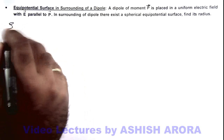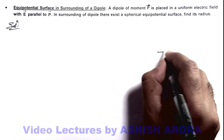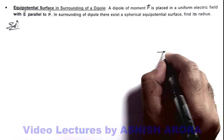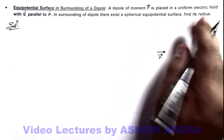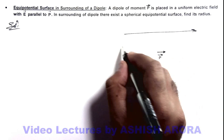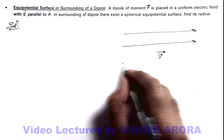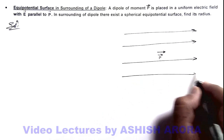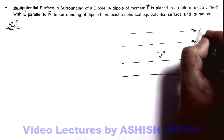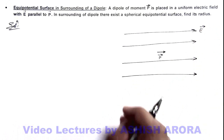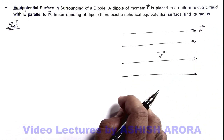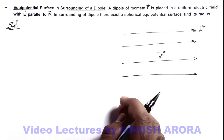If we draw the situation, we can see: this is a dipole with dipole moment p vector, placed in a uniform electric field which is parallel to the dipole. The uniform electric field e vector points left to right, and the direction of electric field is parallel to the dipole moment vector. We are required to find the radius of this spherical equipotential surface.